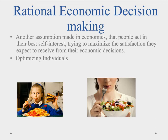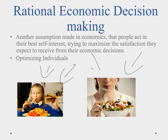Another assumption made in economics is that people act in their best self-interest by trying to maximize the satisfaction they expect to receive from their economic decisions. This is why in economics we refer to people as optimizing individuals. But how rational are people when they make decisions? Is the rationale behind a girl eating a cheeseburger better than the rationale for a woman eating a salad? This girl is satisfying her taste utility, whereas this woman is satisfying her nutritional utility. Which one is more rational, and who are you to decide?